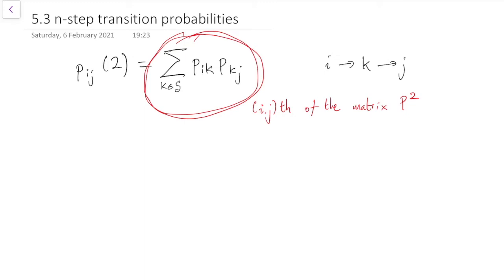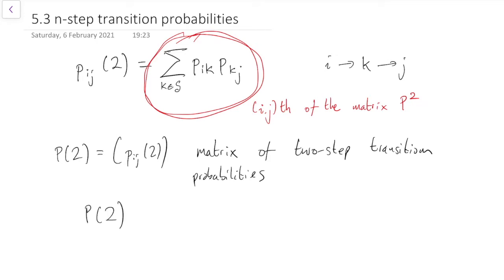So, to put this another way, if we write P2 for the matrix of two-step transition probabilities, then what we're saying here is that we can find them all by doing a matrix multiplication, because P2, the matrix of two-step transition probabilities, is equal to P squared, that is, the transition matrix multiplied by itself.